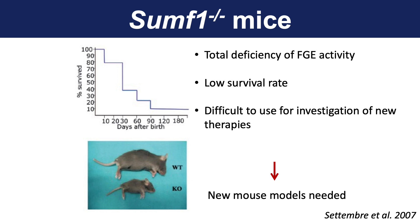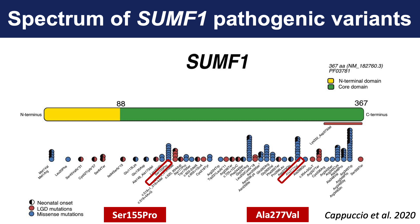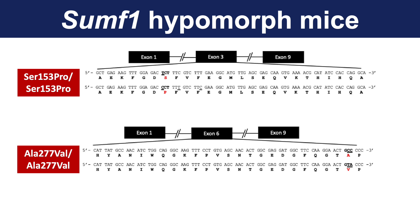Therefore, we wanted to generate a more usable mouse model, and we selected two pathogenic missense variants described in patients that have less severe, non-neonatal forms of multiple sulfatase deficiency. These are the mutations highlighted here: a missense change at position 155 and another missense change at position 277. The corresponding amino acids in the mouse SUMF1 gene are serine 153 and alanine 277, mutated to proline and leucine respectively.